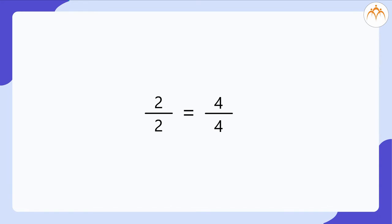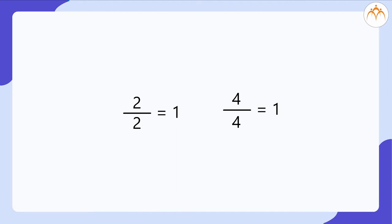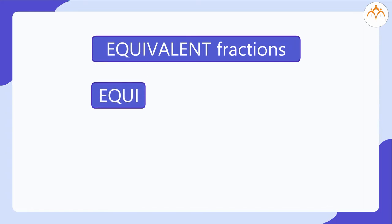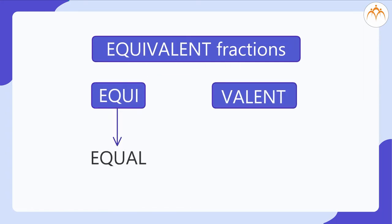These two fractions have the same value, that is one whole. Such fractions are called equivalent fractions, where the word equivalent can be broken into two words: equi means equal and valent means value. Let's take another example to understand it better.